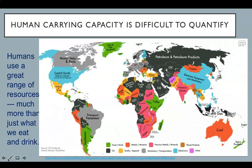One reason it's difficult to measure human carrying capacity is that humans use a great range of resources, much more than just what we eat and drink. Look at this map — it shows which exports make the most money for individual countries. Look at the range of resources in addition to food and drink, like capital goods in the USA which includes aircrafts and transistors. In Canada, Europe, and South America, we've got motor vehicle parts and transport equipment. Then there are textiles, metals, gems, coal, and oil. This is a complicated mix of resources, much more complicated than the resources a deer or bird might need.